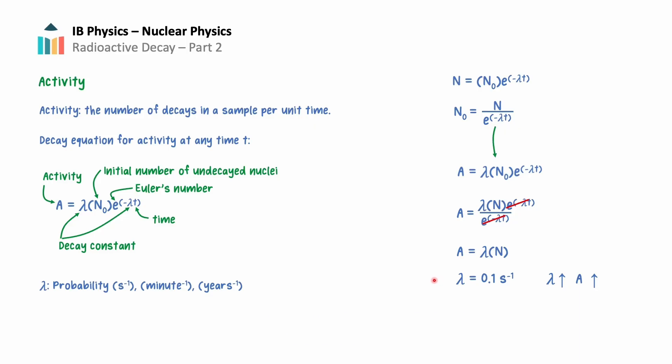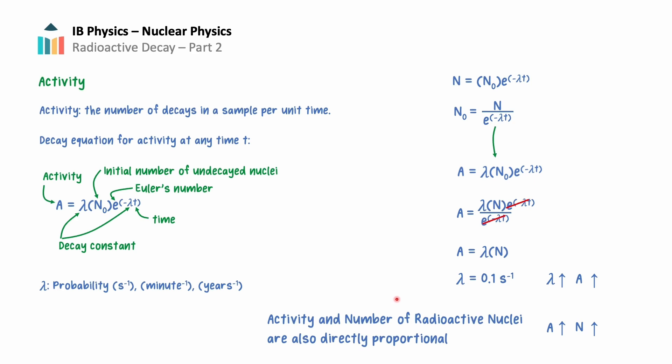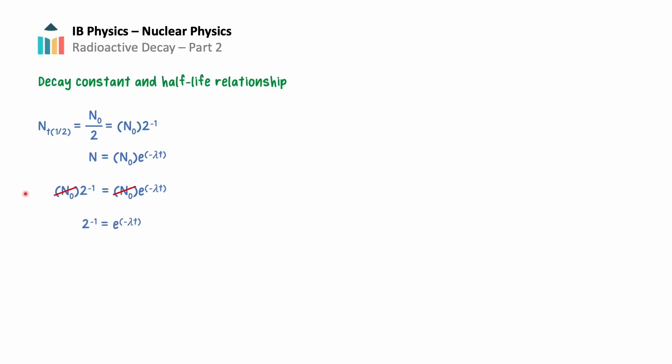The relationship between the decay constant and half-life is not difficult to derive. We have defined the half-life as the time required for half of the radioactive nuclei in a sample to decay. Therefore, n at the half-life equals n-sub-0 divided by 2, which can also be expressed as n-sub-0 times 2 to the negative 1. Substituting into the exponential decay equation and dividing both sides by n-sub-0, the n-sub-0 cancels, giving us 2 to the negative 1 equals e to the negative lambda t.